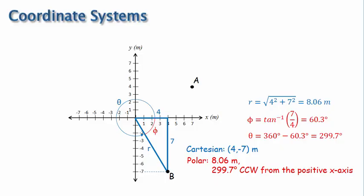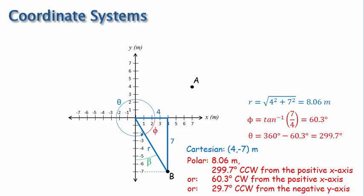So, as I said, the convention is to write the angle counterclockwise from the positive x-axis as we've done. However, it's often referenced in other ways for convenience, such as, in this case, 60.3 degrees clockwise from the positive x-axis, where I've used the angle phi, which is 60.3 degrees. Or we might reference the radial R line to the negative y-axis in this case, which would be this angle I'll call beta. We can see from the picture that beta is 90 degrees minus phi, which is 29.7 degrees. So the polar angle might be written this way: 29.7 degrees counterclockwise from the negative y-axis.